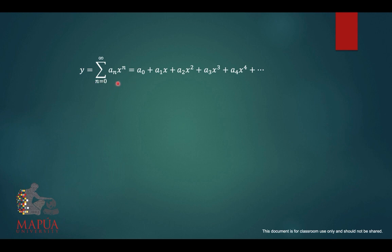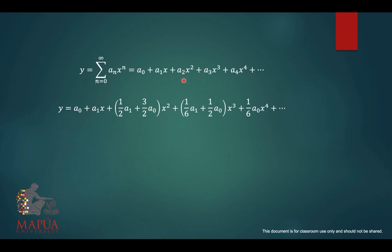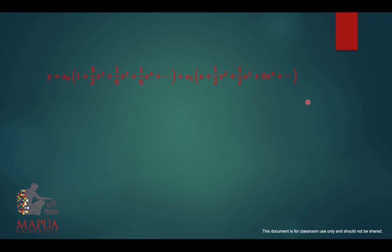Expanding the power series and substituting all coefficients a_2, a_3, a_4, and so on in terms of a_0 and a_1, then combining terms for a_0 and a_1, we get the final general solution for the second order differential equation, expressed as y_1 and y_2 components.